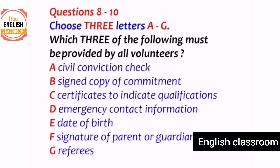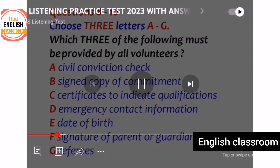The application form asks the usual questions: name, address, and telephone number. You also need to fill in details of who to get in touch with in case of any accident or problem — contact details. This corresponds to option D in the choices.